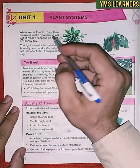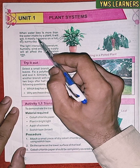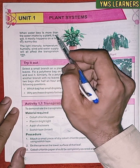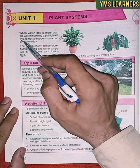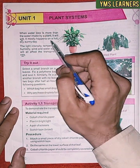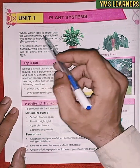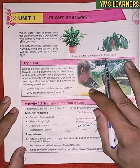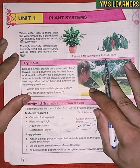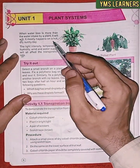When water loss is more than the water intake by a plant, it will wilt. It mostly happens on a hot, dry, sunny day. Light intensity, temperature, humidity, and wind all affect the transpiration rate.